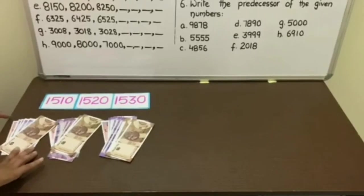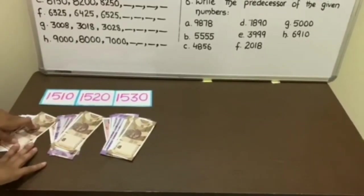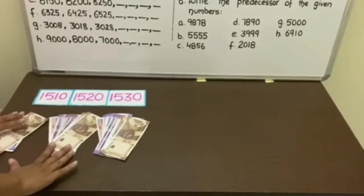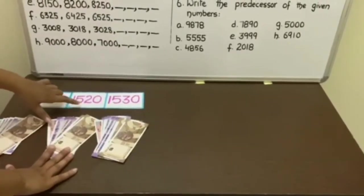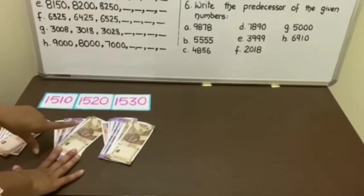Let's count the currency note. 1 note of 1000, 5 of 100 and 1 of rupee 10. Next is 1520. Here it is 1 note of 1000, 5 of 100 and 2 of 20.